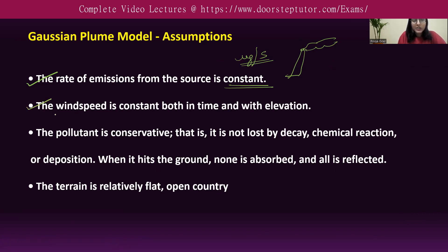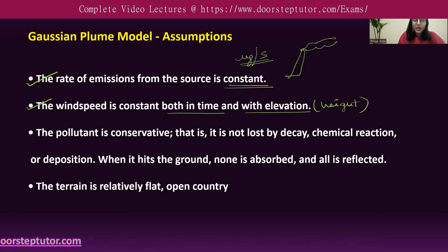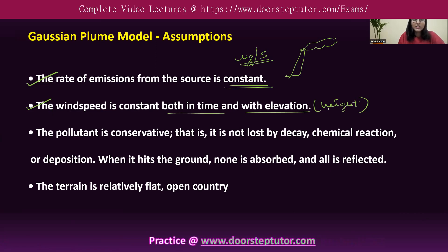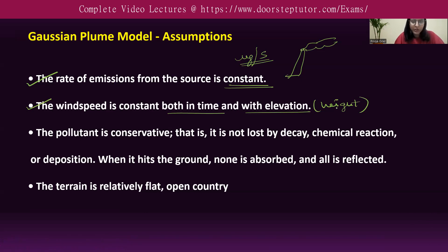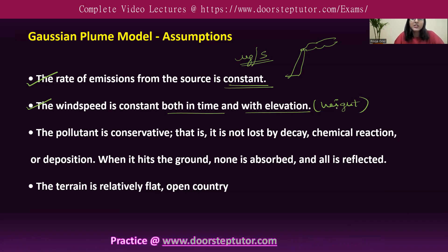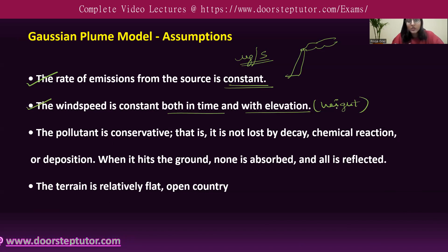The second assumption is that wind speed is constant both in time and with elevation — meaning height. We assume the wind speed does not change with respect to time or height. This is important because wind speed is directly proportional to pollutant concentration: more wind carries pollutant further, less wind has less dispersal effect. This model is applied under stable meteorological conditions, with no variation in wind speed over time or height.